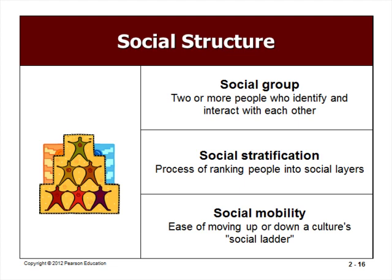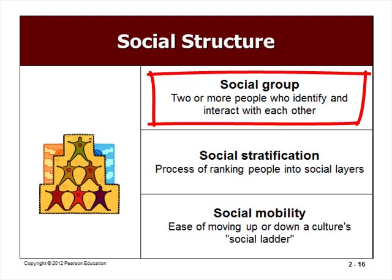Social Structure: Social structure embodies a culture's fundamental organization, including groups and institutions, social positions and relationships, and resource distribution. A social group is a coalition of two or more people who identify and interact with one another, and social groups contribute to identity and self-image. Two groups that play especially important roles in affecting business activities everywhere are family and gender.